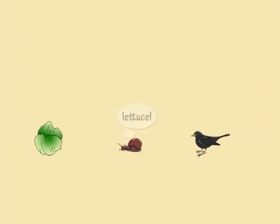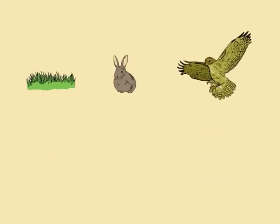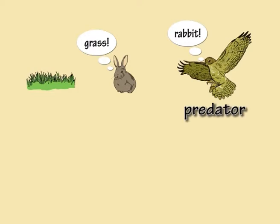For example, snails eat lettuce and a blackbird eats snails, so the blackbird is a predator and the snail is its prey. Similarly, a rabbit eats grass and a hawk eats rabbits, so the hawk is a predator and the rabbit is its prey.